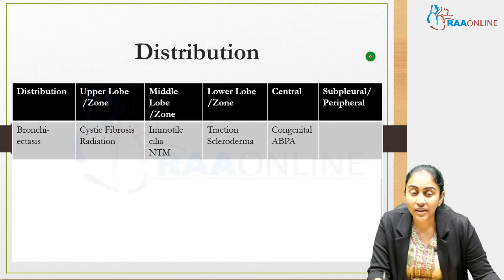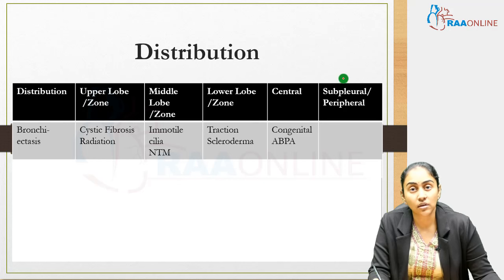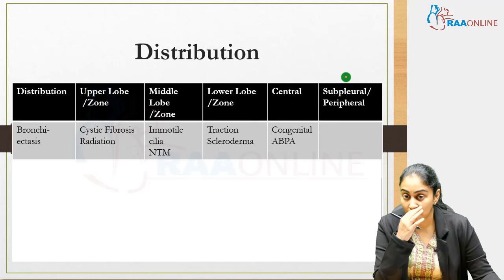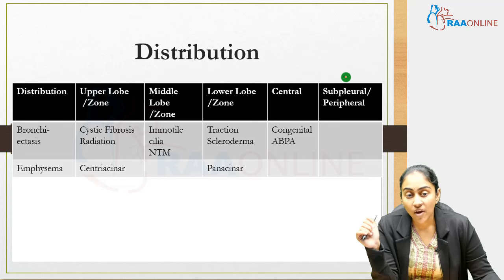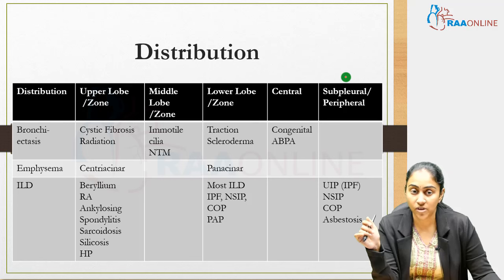Regarding bronchiectasis distribution: cystic fibrosis and radiation cause upper lobe bronchiectasis. Immotile cilia syndromes and non-tuberculous mycobacteria cause middle lobe bronchiectasis. Traction bronchiectasis and scleroderma-associated bronchiectasis cause lower lobe involvement. ABPA causes central bronchiectasis. For emphysema: centriacinar emphysema in smokers is upper lobe; panacinar emphysema in alpha-1 antitrypsin deficiency is lower lobe.